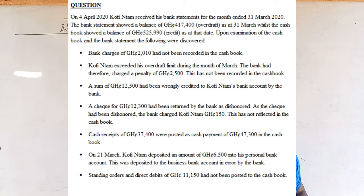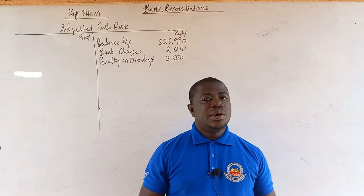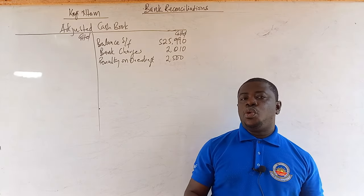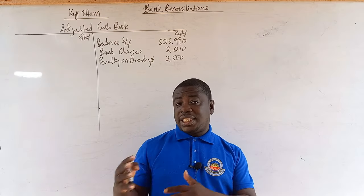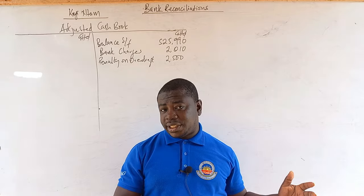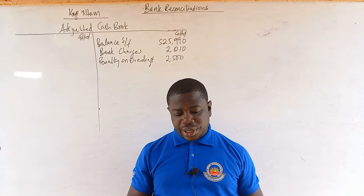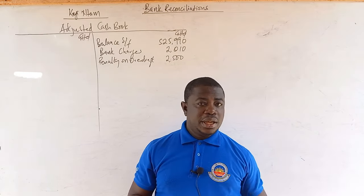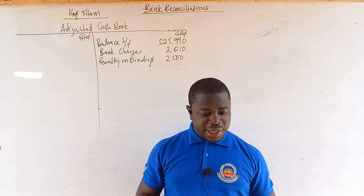A sum of 12,500 had been wrongly credited to Kofintam's bank account by the bank. This is a wrong credit done by the bank. Wrong credits will be adjusted in the bank reconciliation statement because they have the same effect as unpresented checks — both have a tendency of increasing the balance at the bank. So we skip this item for now and will use it in the bank reconciliation statement.